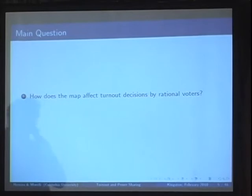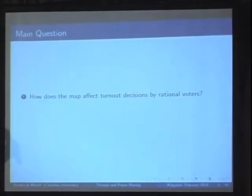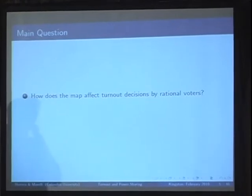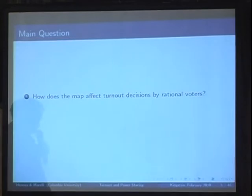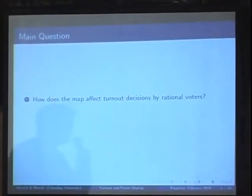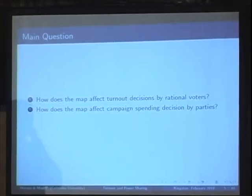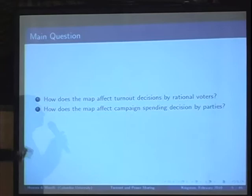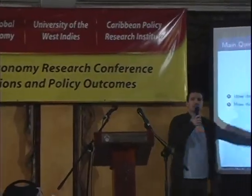We want to look at this from different points of view, using different models of turnout that we're going to take from the shelves. The first question is: how does the mapping affect turnout decisions by rational voters? We'll look at the standard rational voter model and see how rational voters react to those two different mappings — the red one and the blue one. Then we'll look at it from the point of view of parties and from the point of view of ethical voter models, which predict higher turnout than rational voter models.